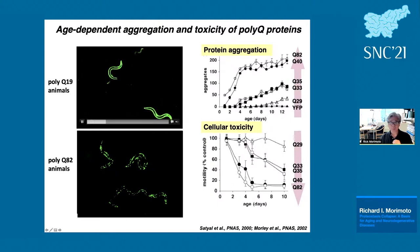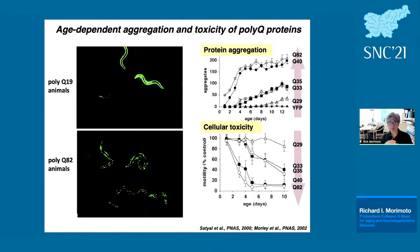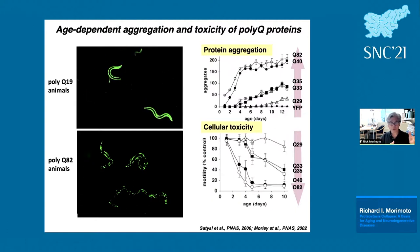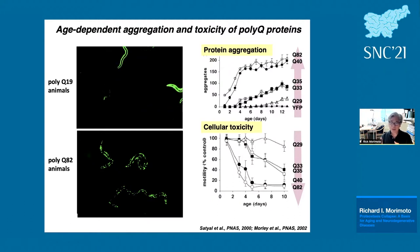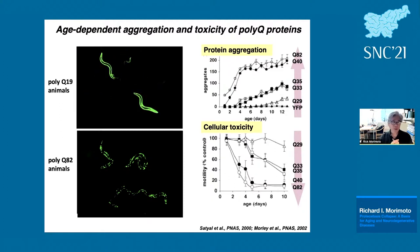C. elegans is a remarkable animal: it has a 60-hour life cycle, lives about two to three weeks, has exactly 959 cells, and is transparent in all life stages. For a short polyglutamine — the threshold in humans is about 35 residues or lower — the protein is absolutely soluble and there is no toxicity.